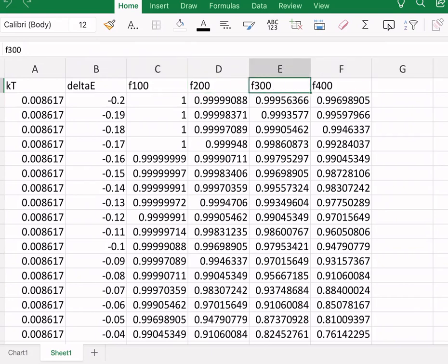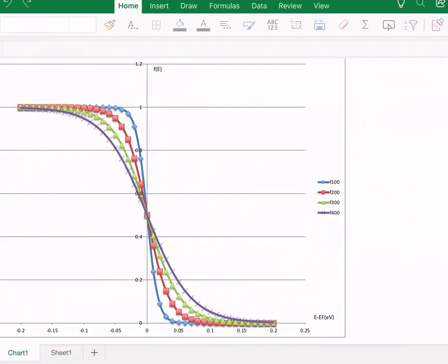And see how this Fermi energy, this Fermi function changes. Please look at the blue function. Look, the y-axis is the Fermi function. And the horizontal axis is delta E, in electron volts, of course.